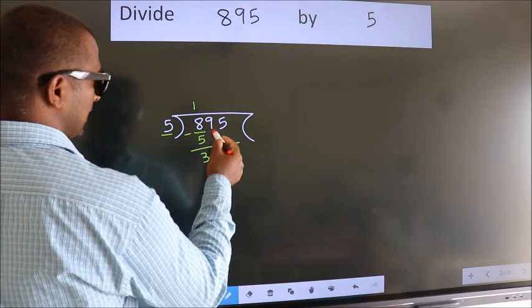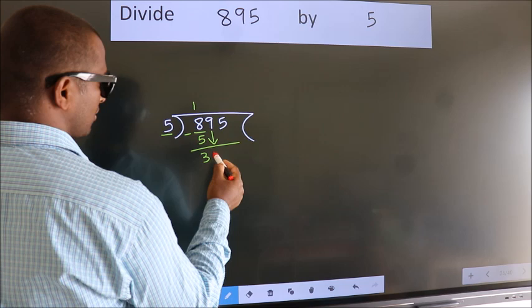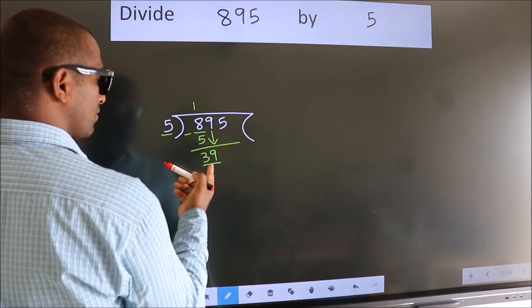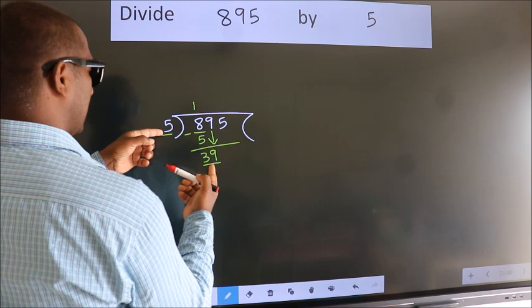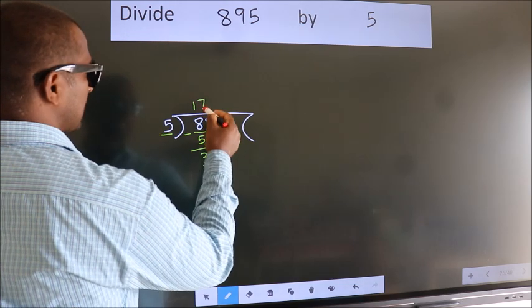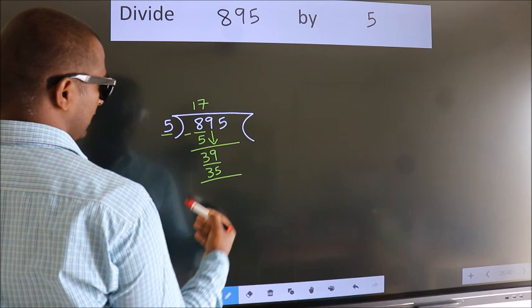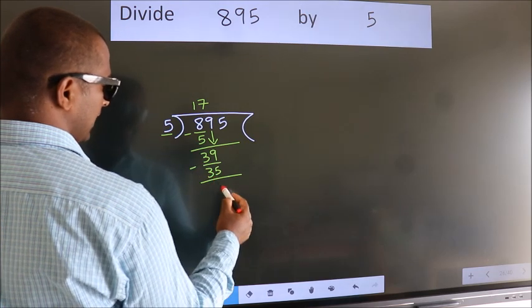After this, bring down the beside number. So, 9 down. So, 39. A number close to 39 in 5 table is 5 7s 35. Now, we subtract. We get 4.